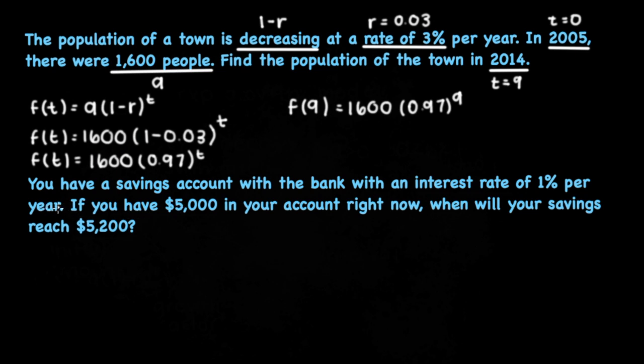The next problem states you have a savings account with the bank with an interest rate of 1% per year. If you have $5,000 in your account right now, when will your savings reach $5,200?